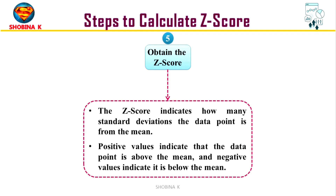The z-score indicates how many standard deviations the data point is from the mean. This calculation standardizes the data point's position in relation to the mean and standard deviation of the data set. A positive z-score indicates a data point above the mean, while a negative z-score indicates a data point below the mean. The magnitude of the z-score reflects the distance from the mean in terms of standard deviations.